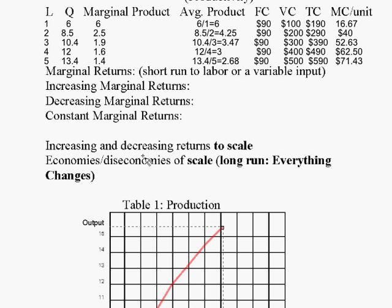But decreasing returns to scale is the opposite. A bigger operation is less efficient, less productive. So if you were to increase the number of machines and workers and everything, you're asking what happens to productivity? What happens to the efficiency or the costs of that kind of facility?